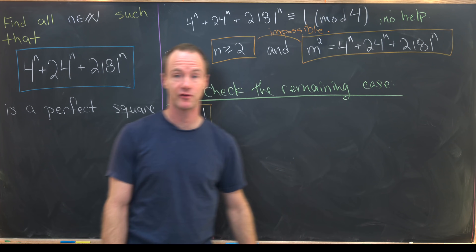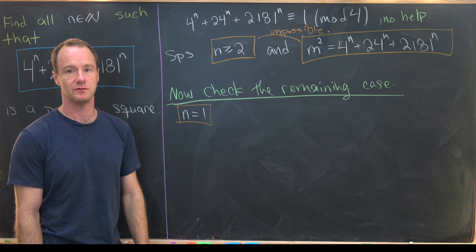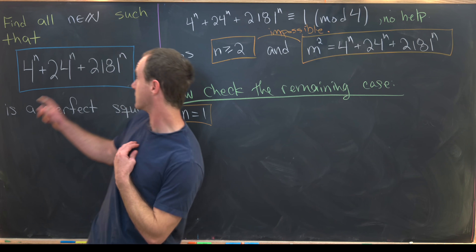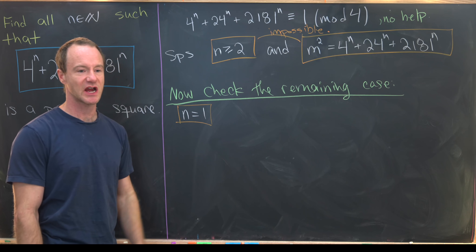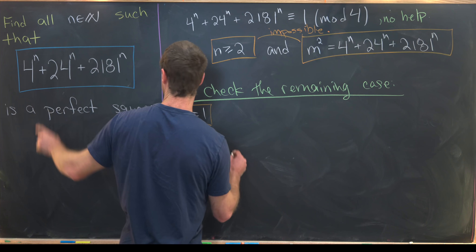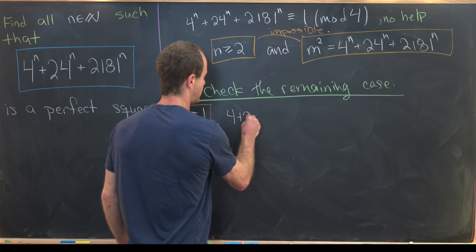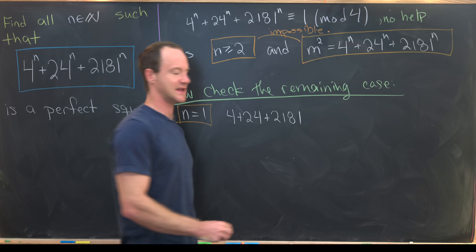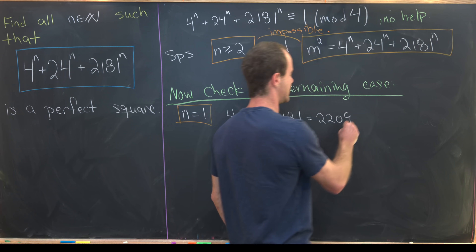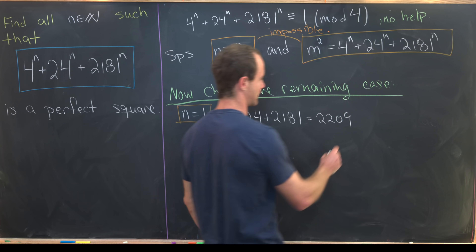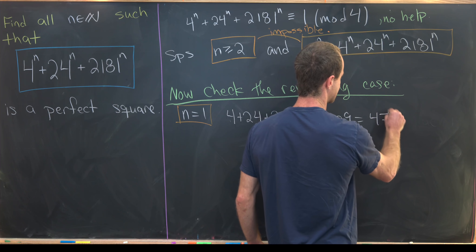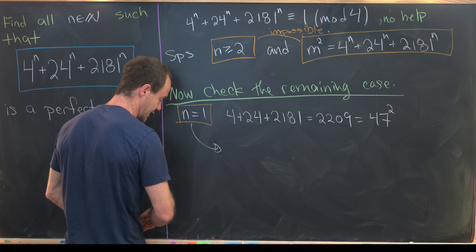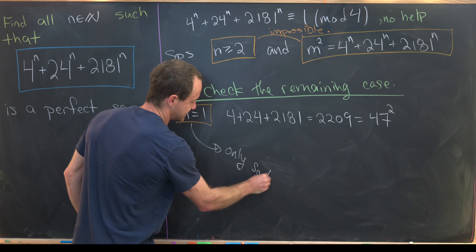So far we've shown the expression is never a perfect square when n ≥ 2, meaning n = 1 is the only possibility. Let's verify: plugging in n = 1 gives 4 + 24 + 2181 = 2209, which is indeed a perfect square — it equals 47². So n = 1 is our only solution.